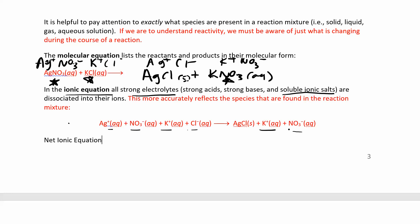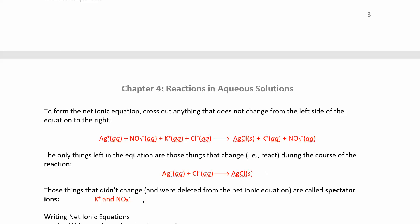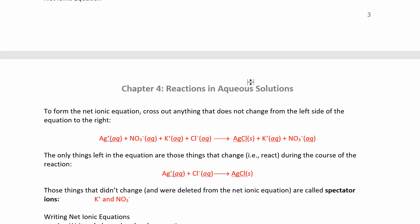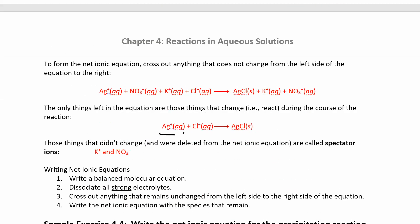For the net ionic equation, I'm going to cancel things that are the same on both sides. On the left-hand side I have a nitrate, and on the right-hand side I have a nitrate. On the left-hand side I have potassium, and here I have potassium. Those things that I just canceled out are called spectator ions — they're things that didn't really take place in the reaction. They were there before and they were there at the end. So whatever's left over is my net ionic equation: silver plus chloride gives silver chloride. The potassium and the nitrate — those are the spectator ions, the soluble ionic compounds on the always-soluble or usually-soluble list.